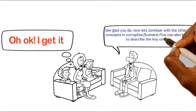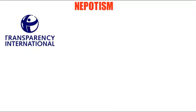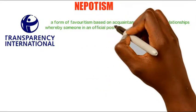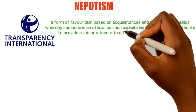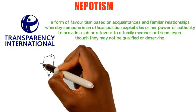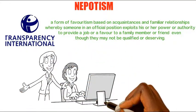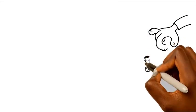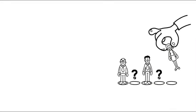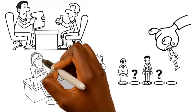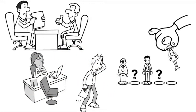Scenario 5 can also be used to describe nepotism and conflict of interest. Transparency International defines nepotism as a form of favoritism based on acquaintances and familiar relationships whereby someone in an official position exploits his or her power to provide a job or a favor to a family member or friend, even though they may not be qualified or deserving. In Scenario 5, the government officer used her position to secure the job for her cousin without advertising. There is a possibility there could be more qualified people out there, but they were denied the opportunity. This is typically nepotism.